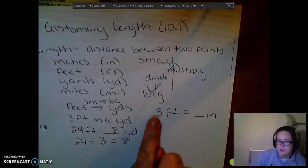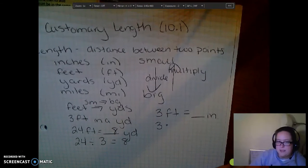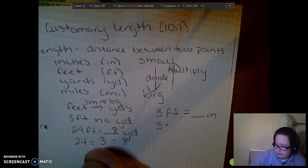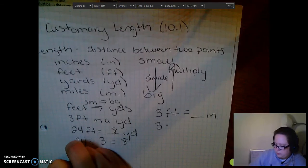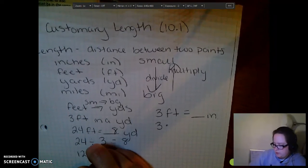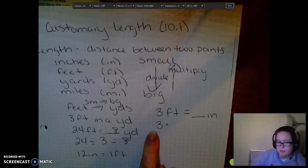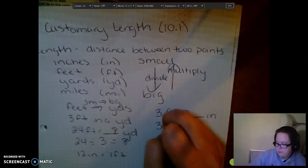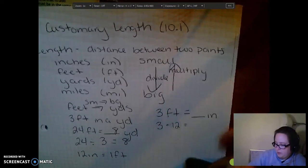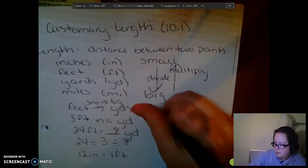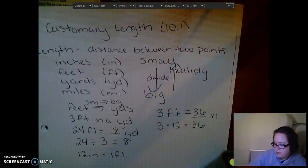So, you're always going to start with the number that you're given. So, three times. Now, there are 12 inches equals one foot. So, we're going to do three times that 12. Equals, three times 12, 36. So, three feet equals 36 inches.